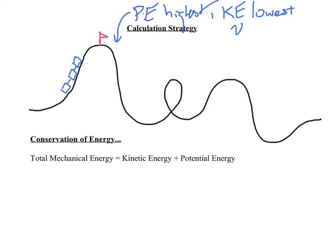At the lowest point, elevation and potential energy are going to be smallest, which means velocity is going to be highest. The main focus throughout this entire module set to prepare us for Great America is conservation of energy. Our total mechanical energy is conserved — kinetic energy plus potential energy equals that total. As we do these calculations, we're going to ignore the impact of friction and air resistance and just look at those two forms of energy.